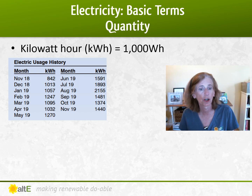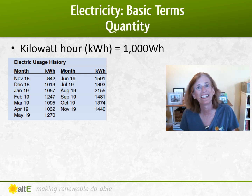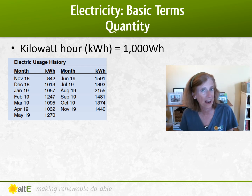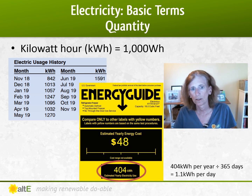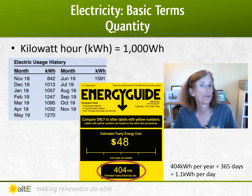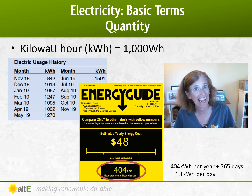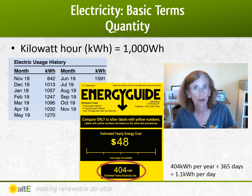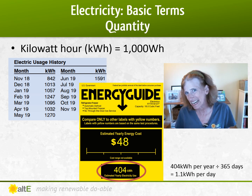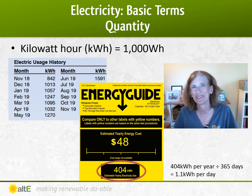You'll also see the term kilowatt hours. Your electric bill comes in kilowatt hours used per month. A kilowatt hour is simply 1000 watt hours. A modern refrigerator uses about one to one and a half kilowatt hours a day, and the average US household uses about 900 kilowatt hours a month — that's 900,000 watt hours a month.